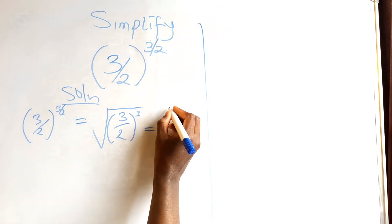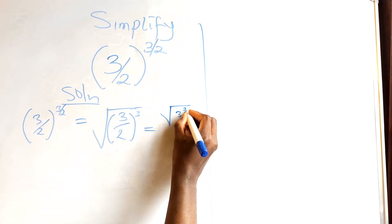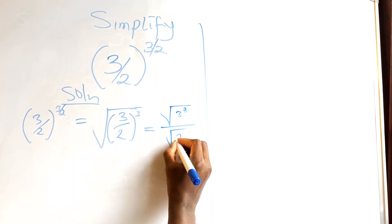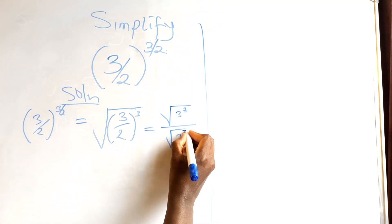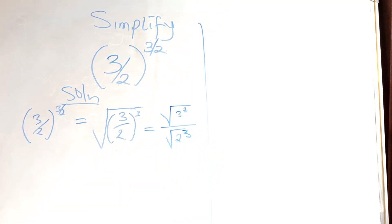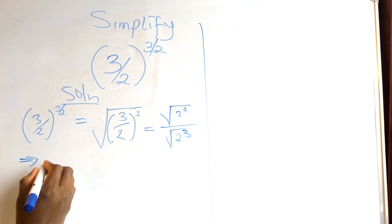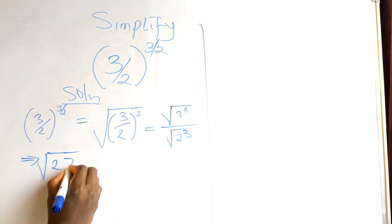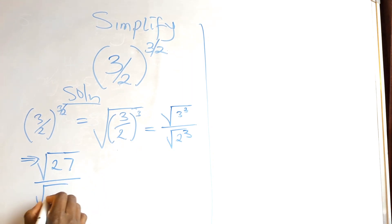This is the same thing as square root of 3 raised to power 3, over square root of 2 raised to power 3. Now, square root of 3 raised to power 3 is 27, divided by square root of 2 raised to power 3 is 8.